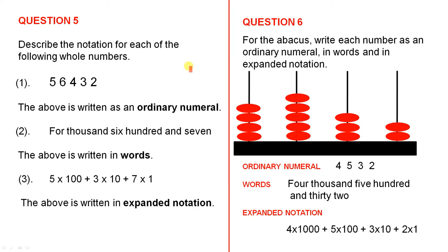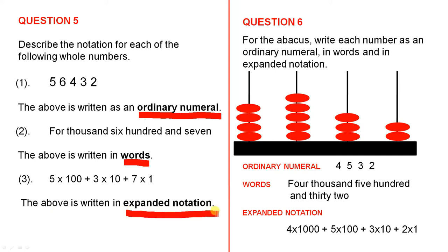Question 5. Describe the notation for each of the following whole numbers. The first one is 56,432 — it is written as an ordinary numeral. What about 4,607? Here we see words, so the above is written in words. What about 5 times 100 plus 3 times 10 plus 7 times 1? That looks like some type of expansion — so the above is written in expanded notation. We've seen three different ways of writing numbers: as an ordinary numeral, in words, or in expanded notation.